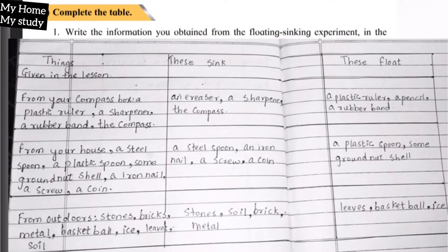Third one, from outdoors: stones, bricks, metal, basketball, ice, leaves, soil. From these, which things will sink? Stones, soil, brick, metal. And which things will float? Leaves, basketball, and ice.